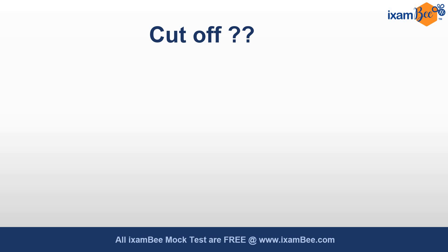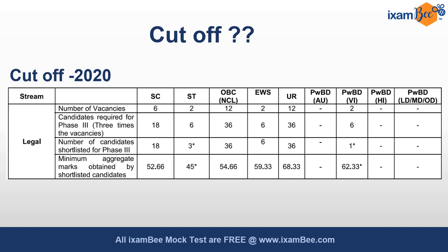Let us see what was the cutoff in the previous year. In 2020, there were about 36 vacancies. The cutoff for Phase 2 was: SC — 52.66, ST — 45, OBC — 54.66, EWS — 59.33, Unreserved — 68.33, and PWBD — 62.33.